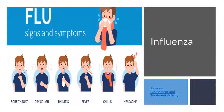Influenza in children presents with sore throat, dry cough, rhinitis, fever, chills, and headache. Oseltamivir can be used for children one year and older within two days of symptom onset. Zanamivir is also used within two days of symptoms but only for children seven years and older, requiring more organ maturity to metabolize the antiviral. Oseltamivir is the most common choice due to its broader age range.